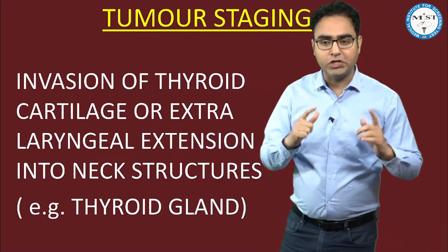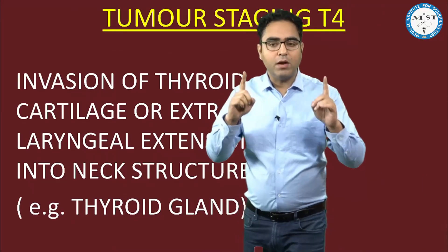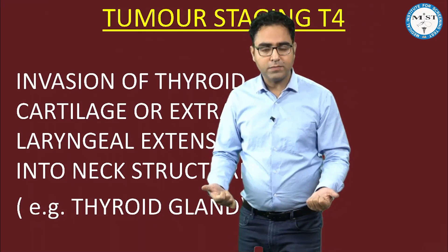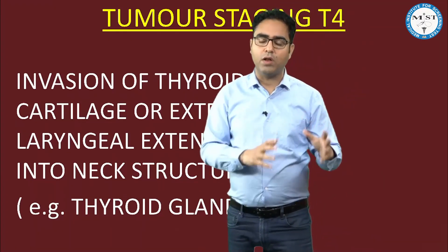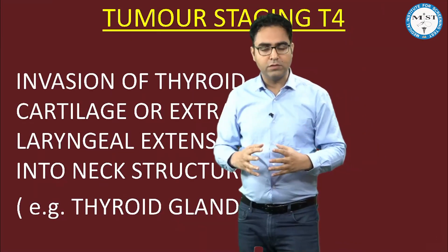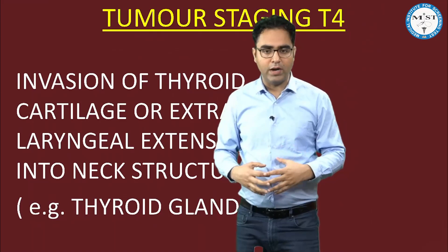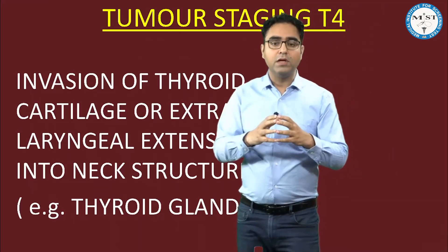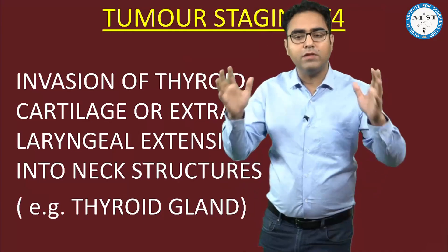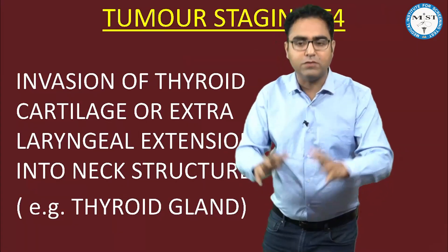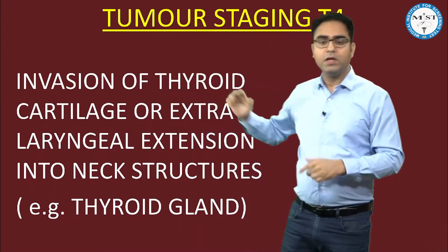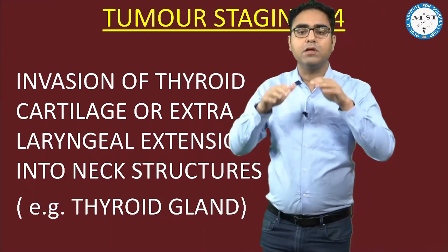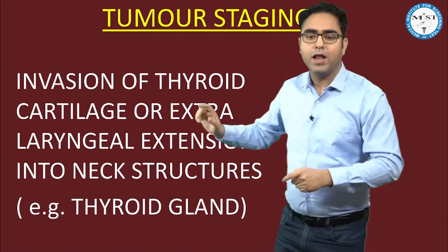Let's revise once again the staging of laryngeal carcinoma. T1 means only one named structure involved — like tumor involving epiglottis. T2 means more than one named structure involved — like tumor involving epiglottis and aryepiglottic folds. T3 means the tumor is so extensive it has caused fixed or immobile vocal cord, or there is invasion of some space like pre-epiglottic or paraglottic space. T4 means invasion of thyroid cartilage, perichondritis of thyroid cartilage, or tumor has gone extralaryngeal into neck structures like the thyroid gland.